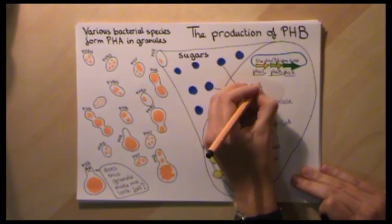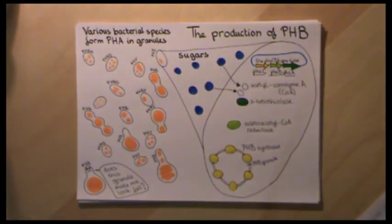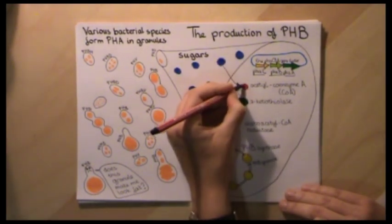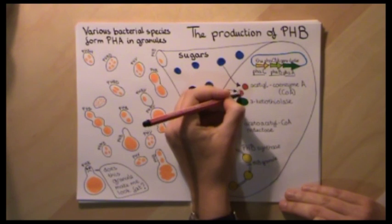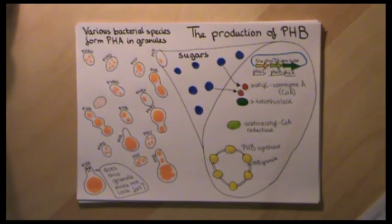In their metabolism, bacteria form acetyl coenzyme A out of sugar. The enzymes formed from the CBA gene cluster convert this to PHB in the following way.